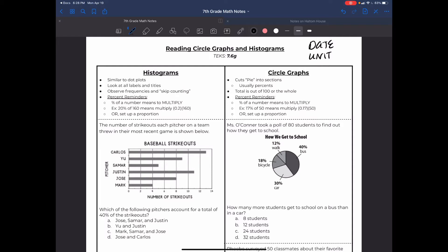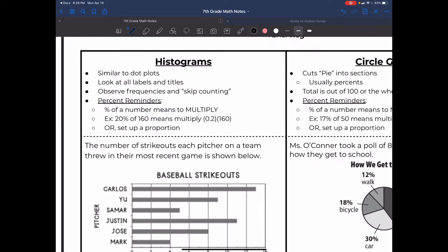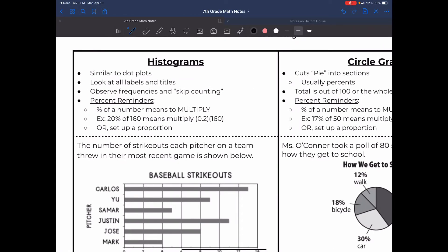We are still in TEKS 7.6G and 7.12A. Let's get into these histogram sides and then we'll come back and do the circle graph side. Some quick notes: they are very similar to dot plots. They have titles and labels, so when we're reading our histograms we will make sure that we read the titles and labels. We need to observe if there's any sort of skip counting or ranges to be aware of.